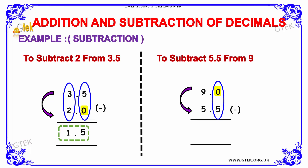When subtracting 0 from 5, 0 cannot be subtracted from 5, so we borrow. When we borrow from the previous term, 9 becomes 8 and we get 1, making the term 10. Subtracting 10 minus 5 gives 5. Since 9 became 8, subtracting 8 minus 5 gives 3. So the overall answer is 3.5.